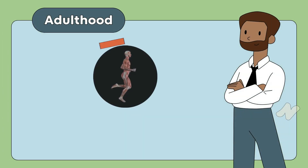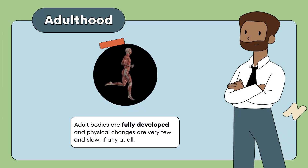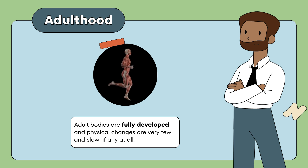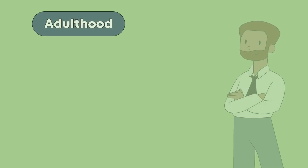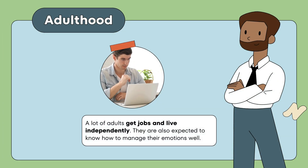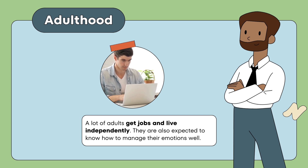Adult bodies are fully developed, and physical changes are very few and slow, if any at all. A lot of adults get jobs and live independently. They are also expected to know how to manage their emotions well.